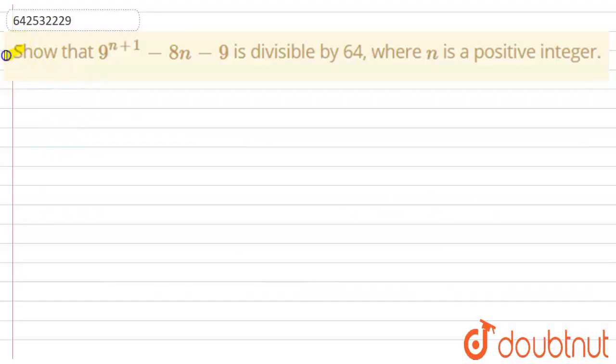Hello everyone, let's start this question. This question says show that 9^(n+1) - 8n - 9 is divisible by 64 where n is a positive integer.